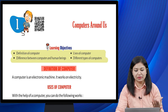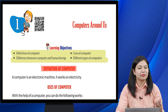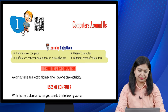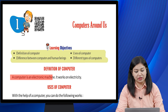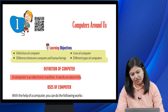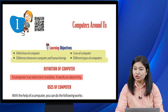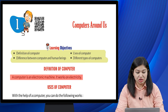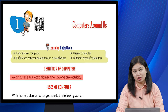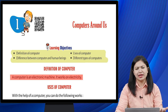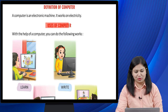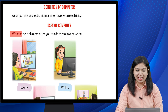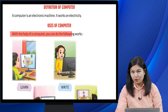Chapter start karne se pehle hum ye jaan lete hain ki computer ki definition kya hoti hai. A computer is an electronic machine — it works on electricity. Computer jo hai ek electronic machine hai jo electricity pe chalti hai.